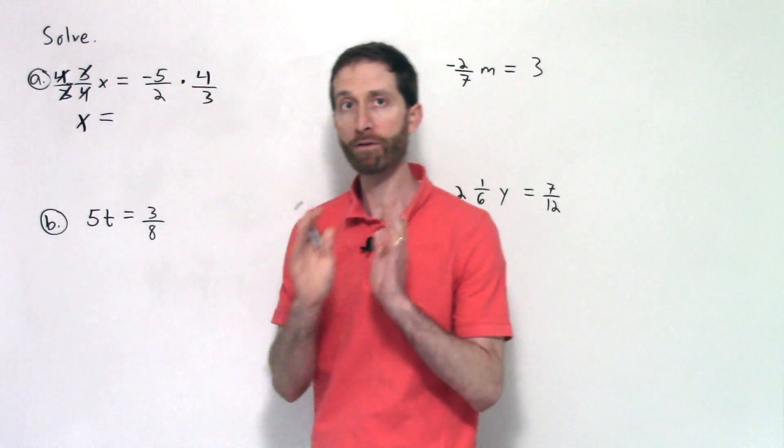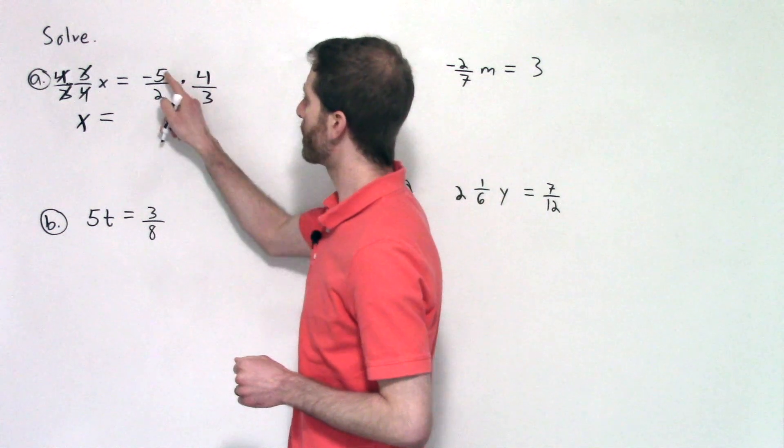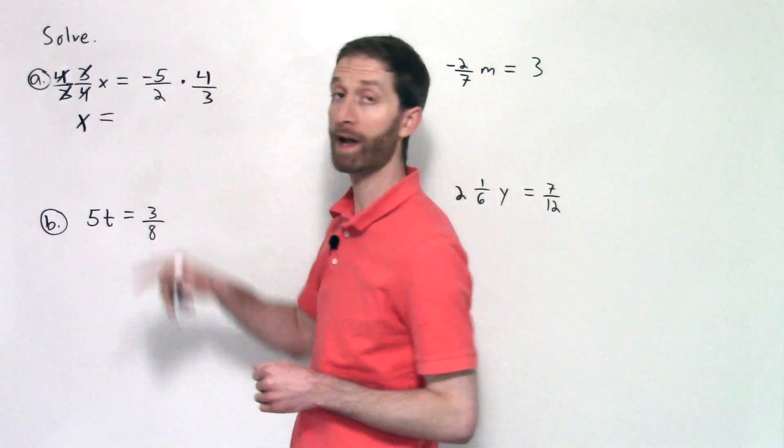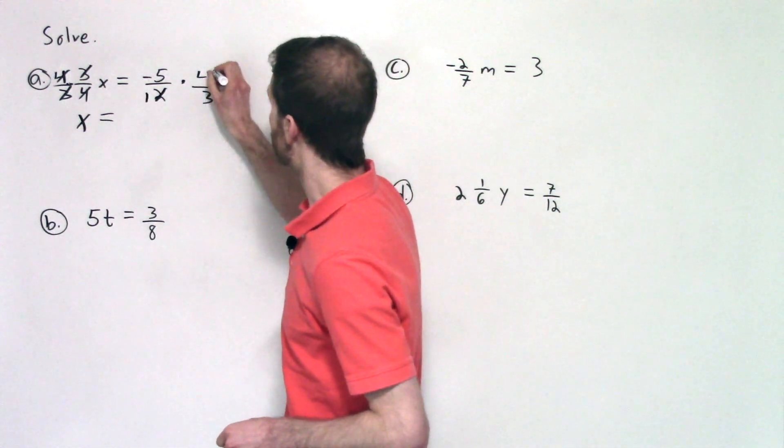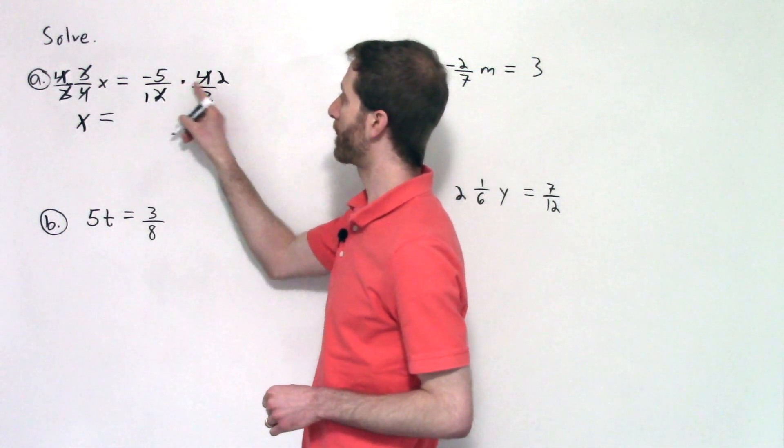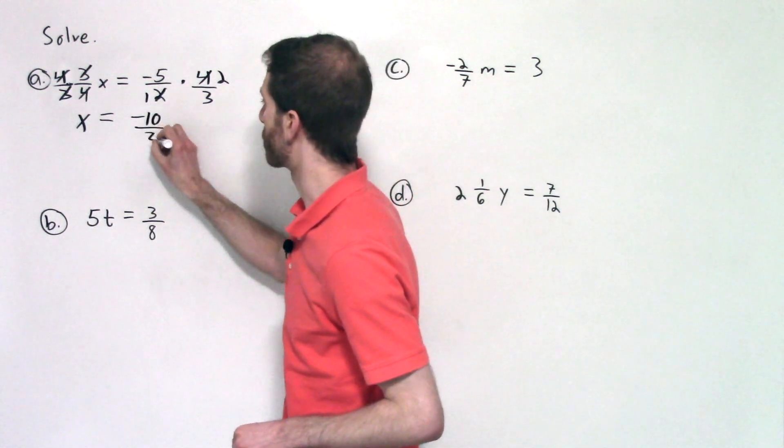On the right-hand side now focus solely on the multiplication of the fractions. So I don't have any GCFs between five and three or five and two, but I do between four and two. Two goes into itself one time, and into four, two times. So now we multiply across so you get negative five times two is negative ten, all over one times three, which is three.